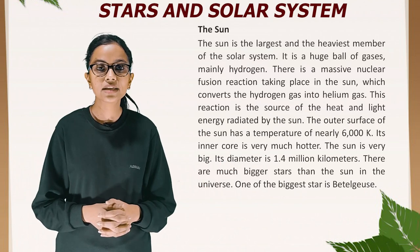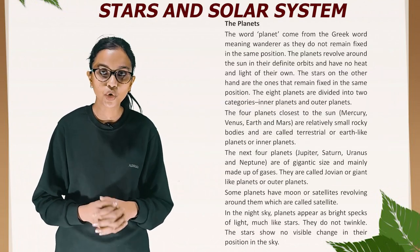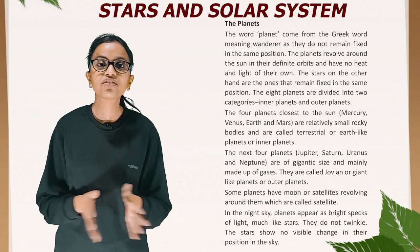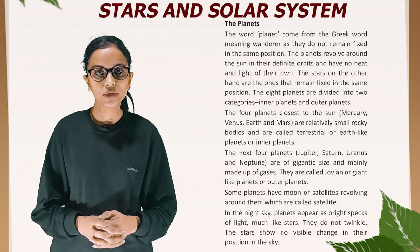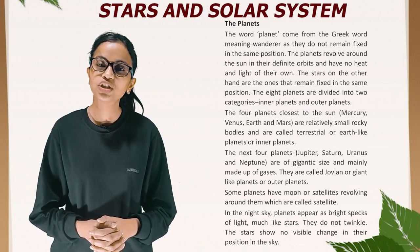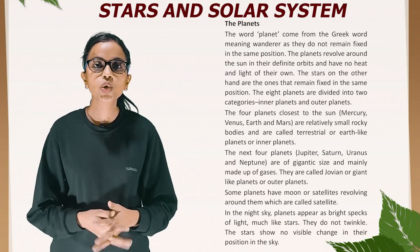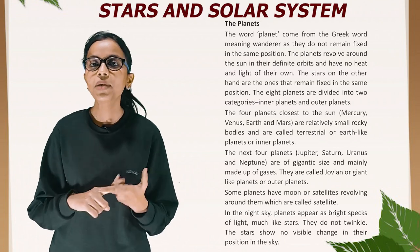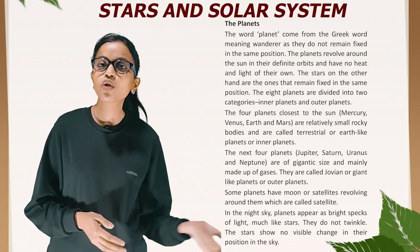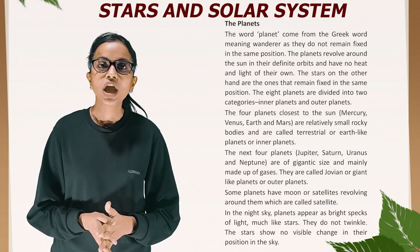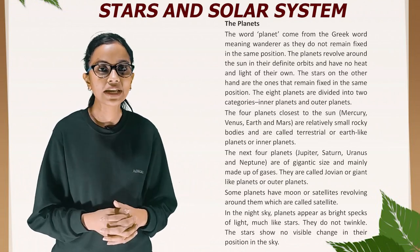The word 'planet' comes from the Greek word meaning 'wanderer', as they do not remain fixed in the same position. The planets revolve around the Sun in their definite orbits and have no heat and light of their own. The eight planets are divided into two categories: inner planets and outer planets. Mercury, Venus, Earth, and Mars are relatively small rocky bodies called terrestrial or earth-like planets. Jupiter, Saturn, Uranus, and Neptune are of gigantic size and mainly made up of gases; they are called Jovian or giant-like planets or outer planets.